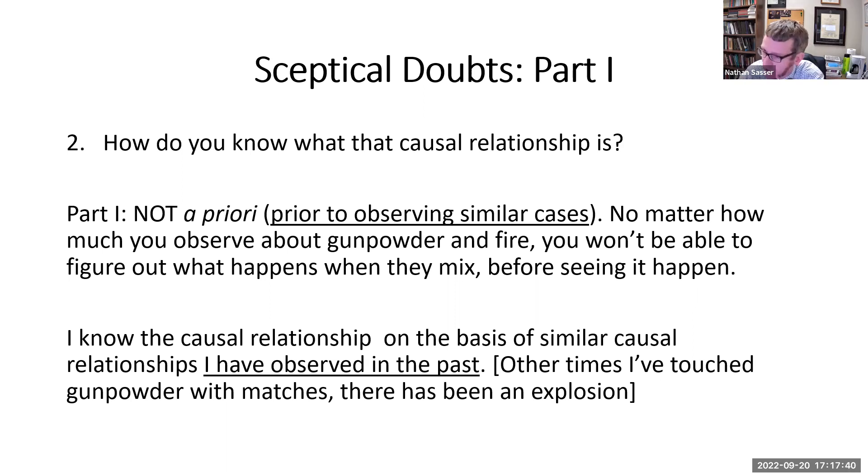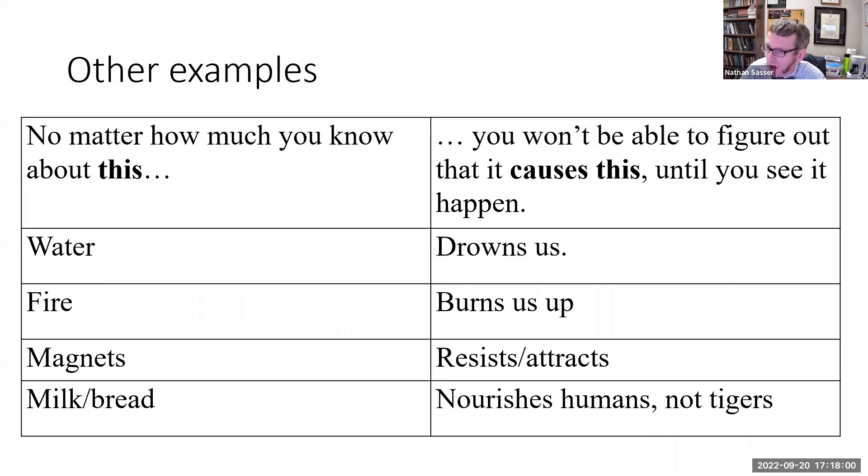Now, he thinks that it may be hard to convince you of this. There may be cases where you think no, I could have figured out what this was going to produce even if I'd never seen anything like it before. For example, I would know even if I never tried it before that if I submerge my face in water, I'm going to drown and I would never do it. He wants to say no, you wouldn't. You couldn't possibly, no matter how much you know about water right down to the chemical molecular structure and no matter how much you know about the human lung right down to the molecules, you would not know what happens when humans are submerged in water until you've seen it happen. You wouldn't know what chemical reactions would happen that would eventually cause drowning unless you'd seen the same thing happen before. You wouldn't know what fire was going to do when you stuck your hand in it or you stuck anything in it unless you had seen fire burn stuff up before.